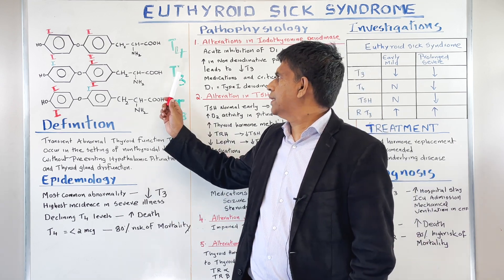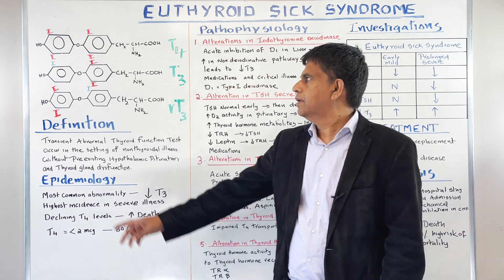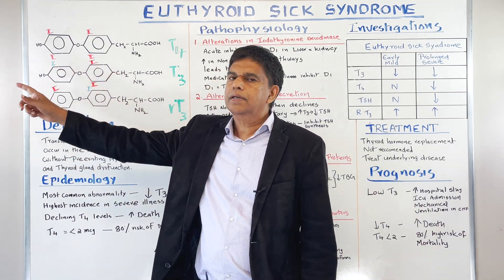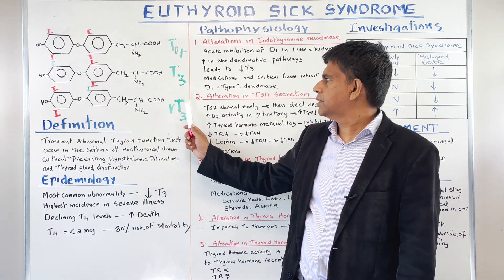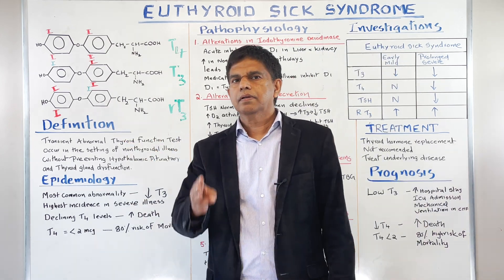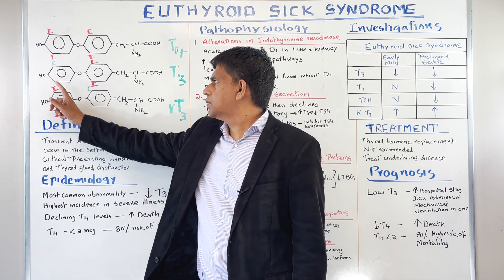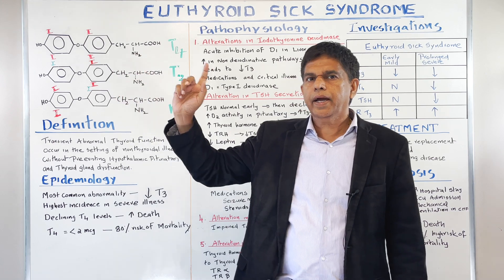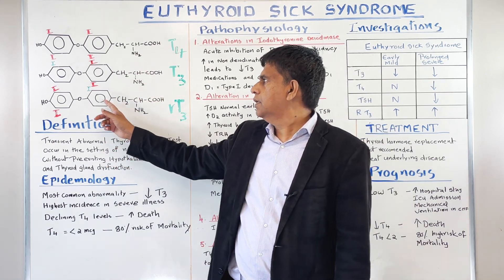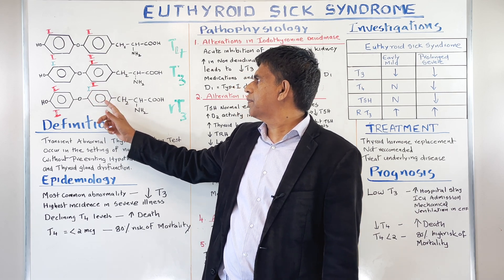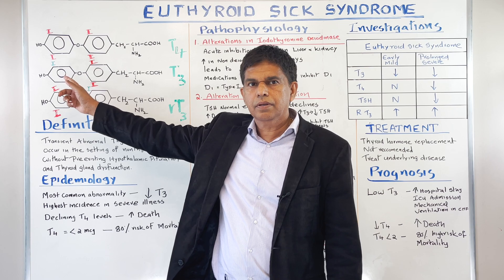Now let's go to T3. Tri is the word — three iodines. Triiodothyronine. And Reverse T3 — also tri, so one, two, three iodines. Triiodothyronine, but it's reverse. What is the difference? You got the iodine in the inner ring in reverse T3, and in the other T3 it's in the outer ring.